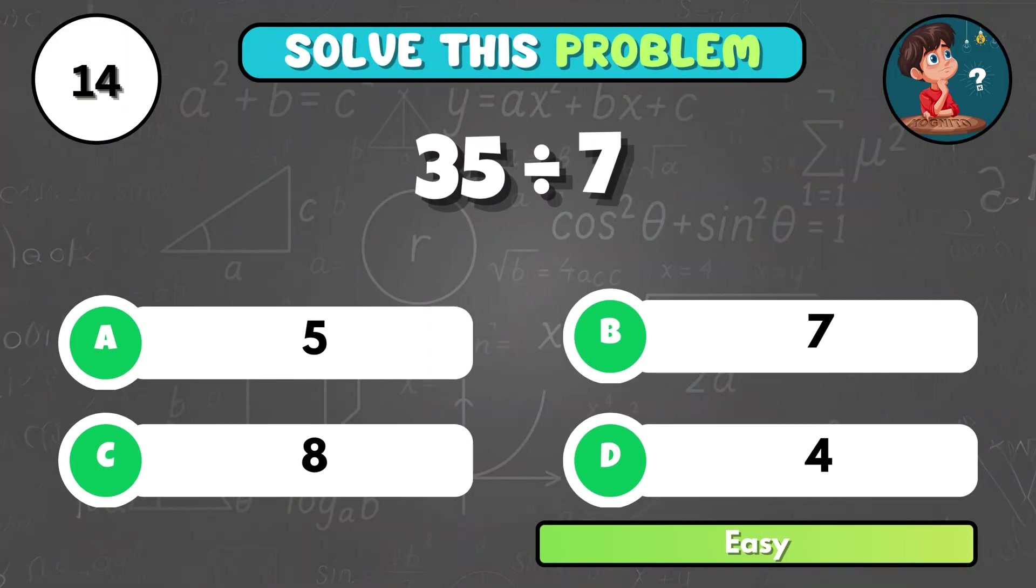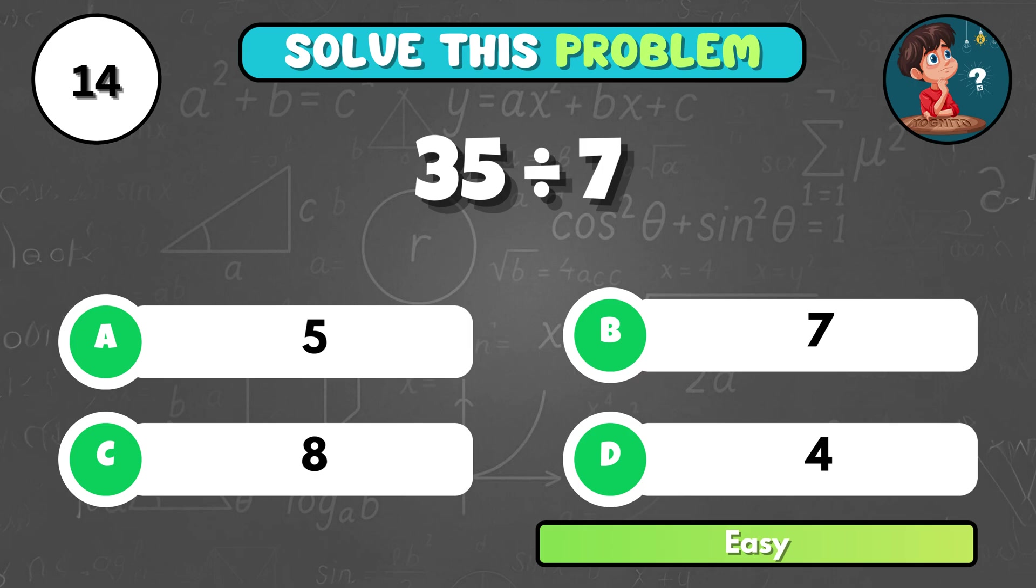Can you solve 35 divided by 7? It's A, 5.